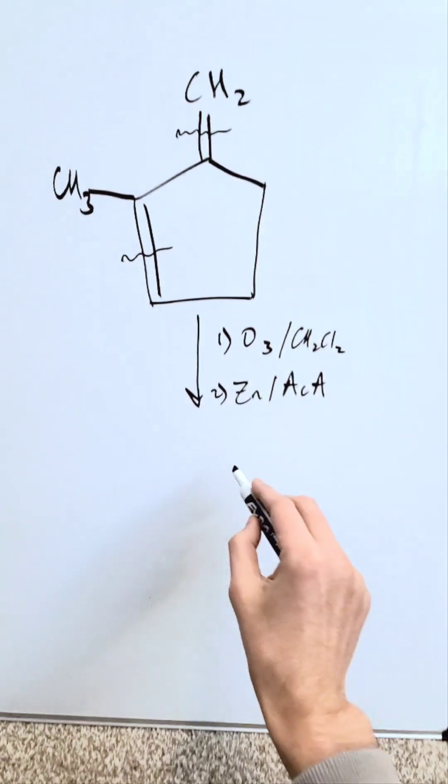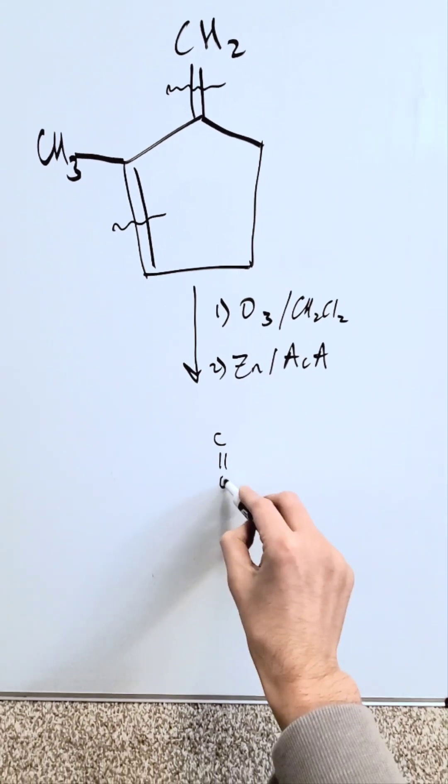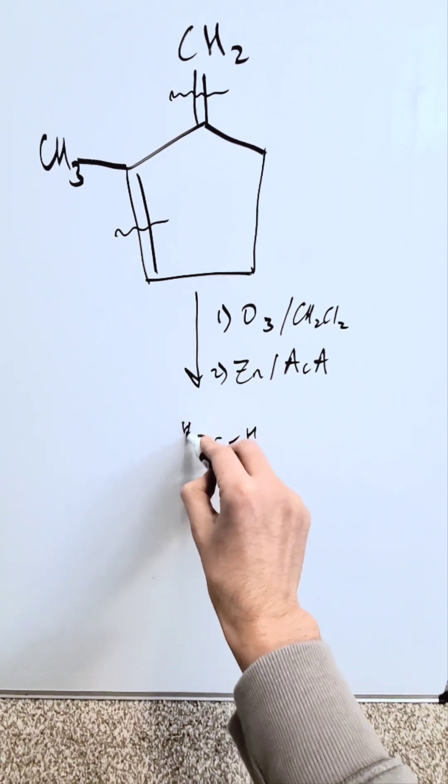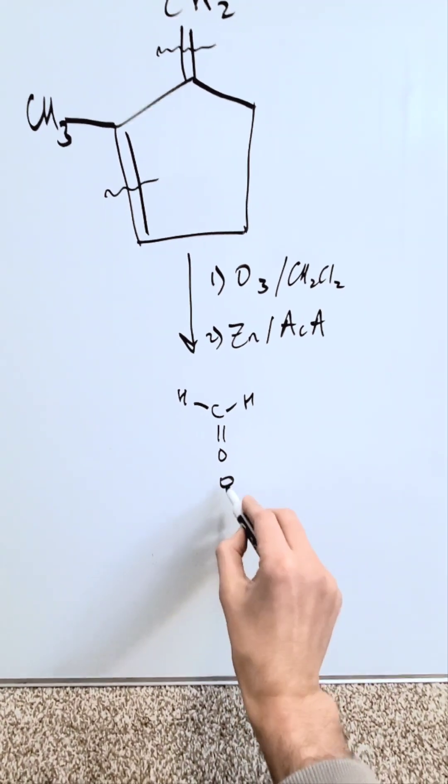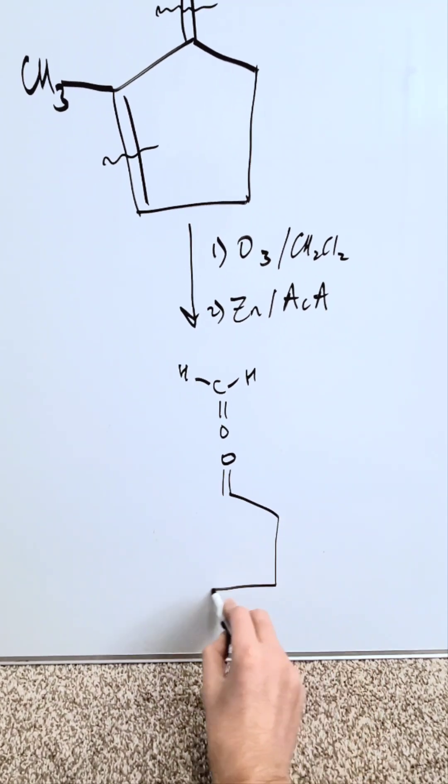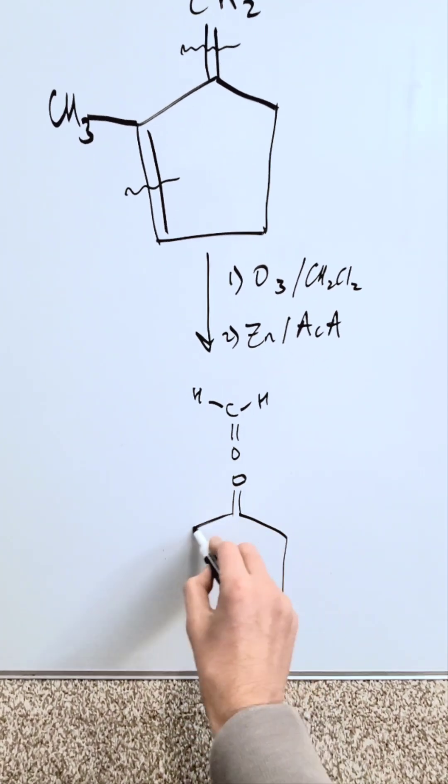When I cleave this top part, you're going to generate an aldehyde and it will look like this. This is the item coming from CH2. Then the item over here will generate a carbonyl and it looks like this. Draw the rest of the molecule to the best of your ability and you see it.